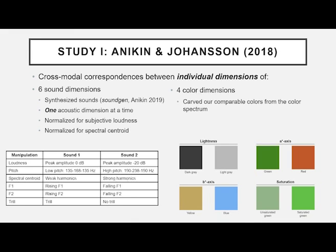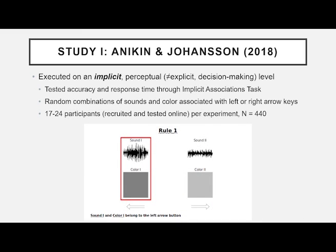For sounds, we included loudness, pitch, spectral centroid, the first two formant frequencies, and trills based on previous literature. For colors, we looked at lightness, the A axis (green to red), the B axis (yellow to blue), and saturation. The colors appear quite dull because when you carve them out from a comparable color space controlling for saturation and lightness, this is what comes out. We executed a test on an implicit perceptual level, measuring accuracy and response times connecting these two parameter groups.